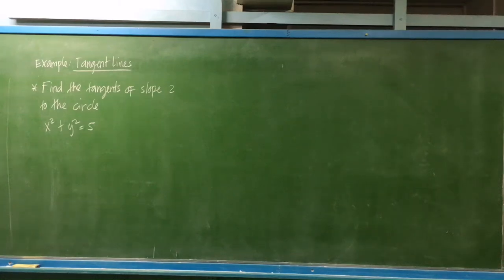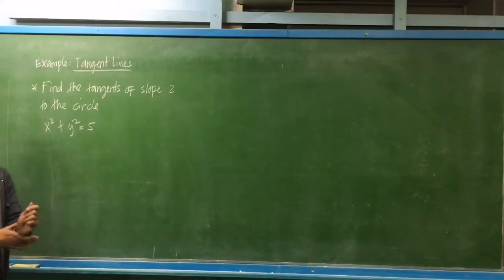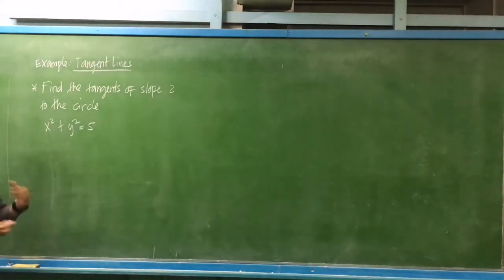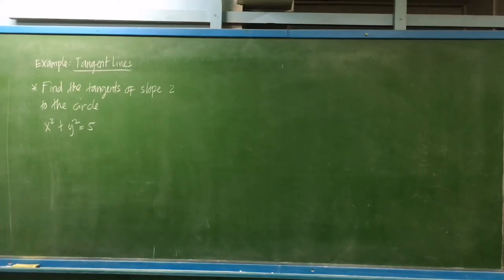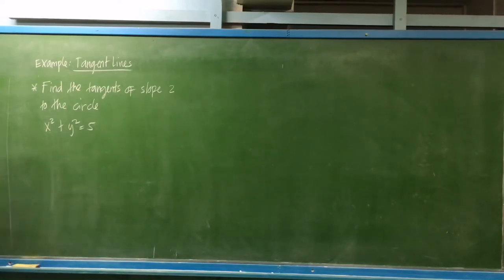Let's have another example for tangent functions using differential calculus. Find the tangents of slope 2 to the circle x squared plus y squared is equal to 5.